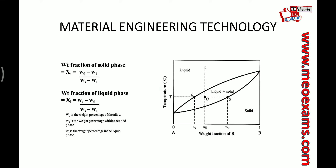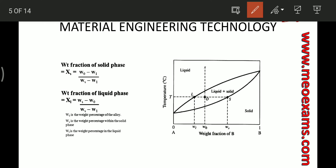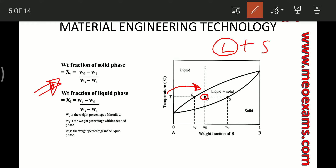Another important tool is the lever rule. Using the lever rule formula, we can find the percentage of liquid and the percentage of solid present at any particular point in the two-phase region for a given composition.